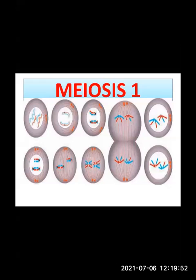The homologous chromosomes are divided into two groups and thus two haploid cells are formed. A cell which carries only one set of chromosomes is called haploid. If there are two sets, then we call it a diploid chromosome.